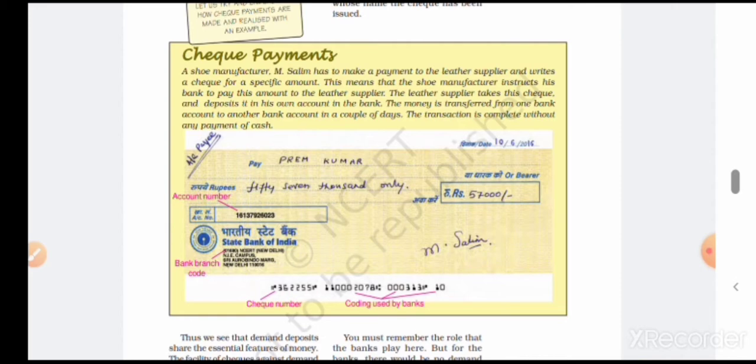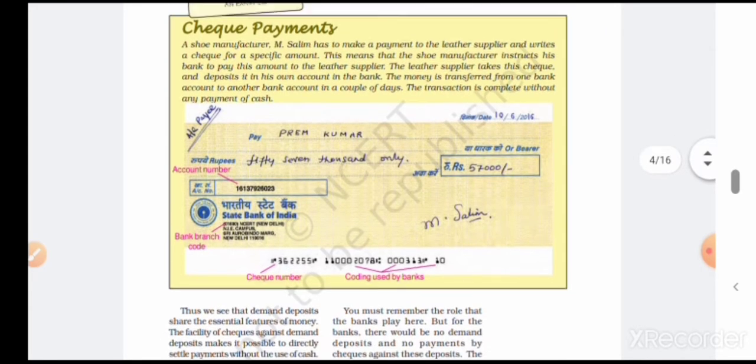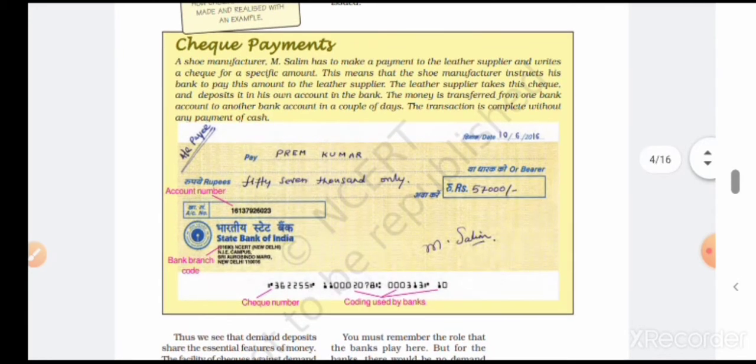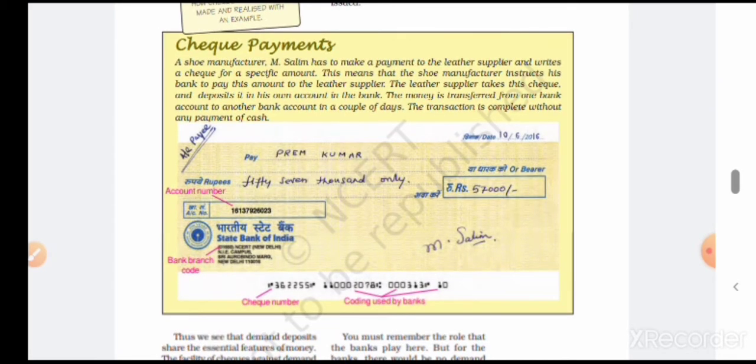To resolve these crimes and problems, banks introduced transmission by check. The special thing about checks is that money can only be withdrawn by the person whose name is mentioned on it. In this example on screen, you can see Prem Kumar's name written, meaning this fifty thousand or fifty-seven thousand rupees can only be withdrawn by Prem Kumar. If this check is lost, nobody else can get this money back, making it more secure.